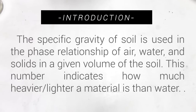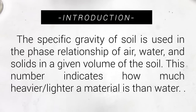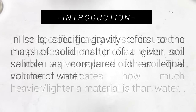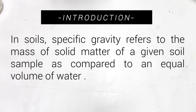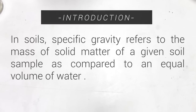The specific gravity of a soil is used in the phase relationship of air, water, and solids in a given volume of the soil. The number indicates how much heavier or lighter a material is than water. Specific gravity refers to the mass of solid matter of a given soil sample as compared to an equal volume of water.